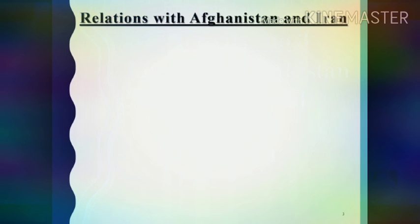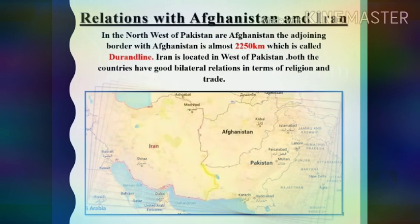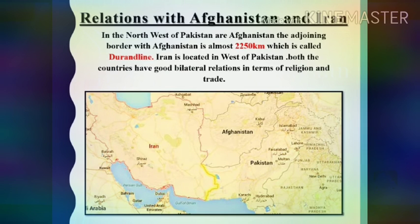The first topic is the relation of Pakistan with the countries of Afghanistan and Iran. In the northwest of Pakistan is Afghanistan. Look at the map — you can see Afghanistan is located in the northwest of Pakistan. The adjoining border with Afghanistan is almost 2250 kilometers, which is called the Durand Line.